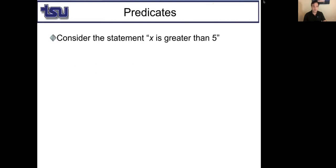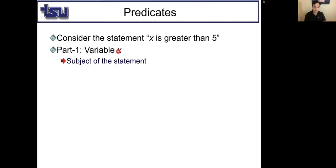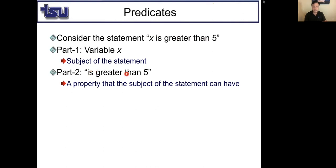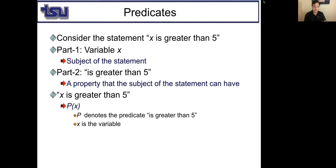What are predicates? Consider the statement 'x is greater than five.' That's not a proposition because we don't know what x is. If we say '10 is greater than five,' that's a proposition. But 'x is greater than five' is not, because we don't know if it's true or false. In this statement, x is the variable — the subject of the statement — and 'is greater than five' is a property that x can have. I can represent this as P(x), where P denotes the predicate 'is greater than five' and x is the variable.